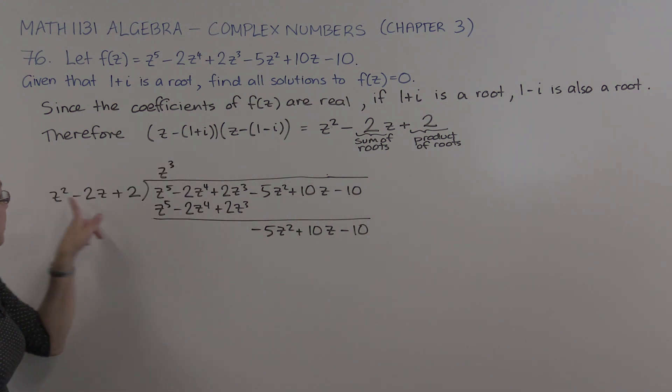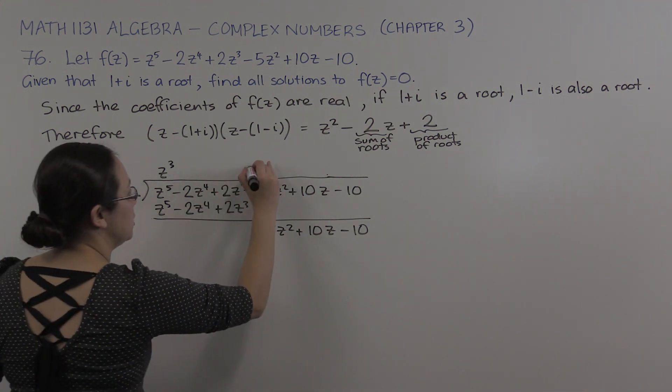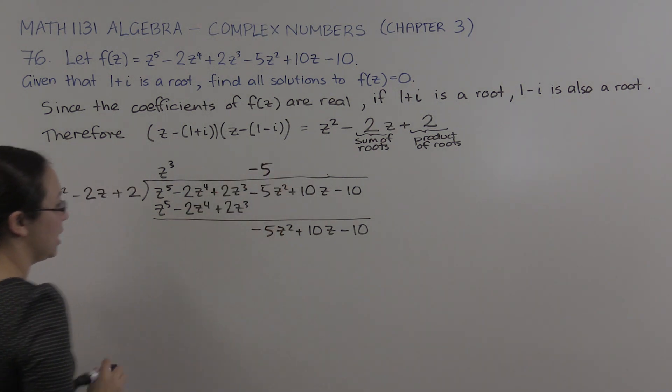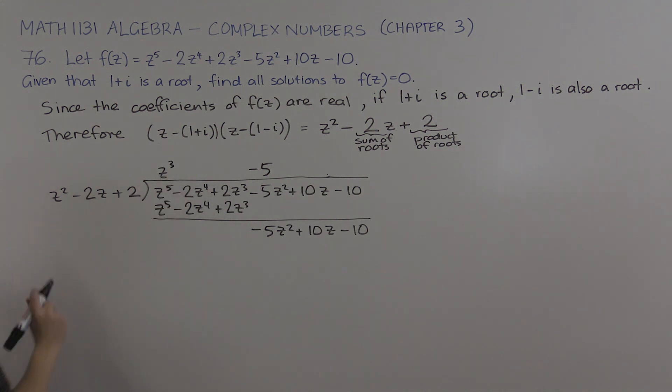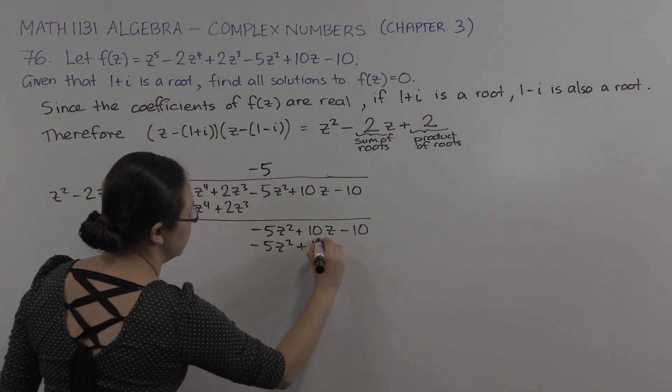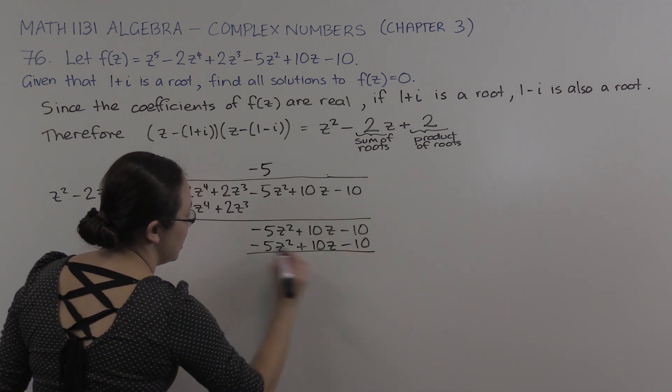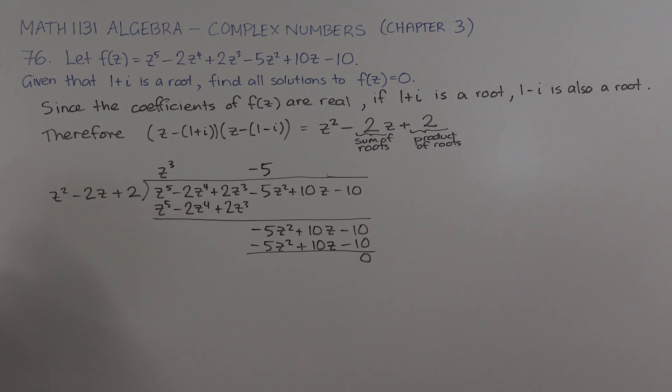When we do it again, how many z squareds are in minus 5z squared? Just minus 5 of them. I usually put them in line with where I'm up to, but obviously you can put it over here. When we multiply this out, we actually get exactly the same thing: minus 5z squared plus 10z minus 10. And that subtracts away. We expect a remainder of 0 because we know that it's a factor. But now we know that z cubed minus 5 is another factor. That's the quotient.